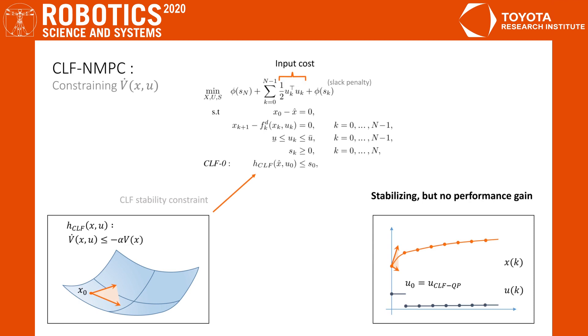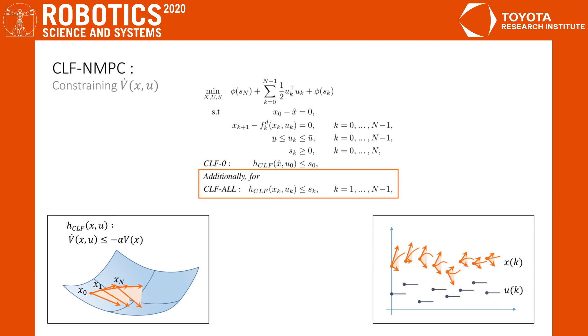So, we need to somehow add the notion of stability to the tail of the horizon, and this leads us to the first combined approach, where we take the constraint on the Lyapunov derivative and apply it along the entire horizon.